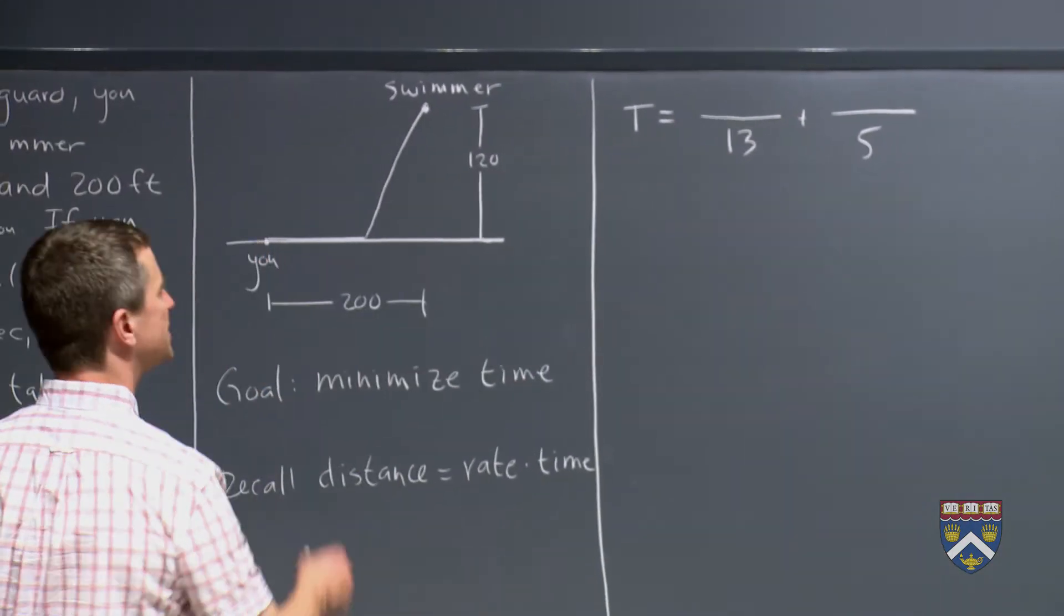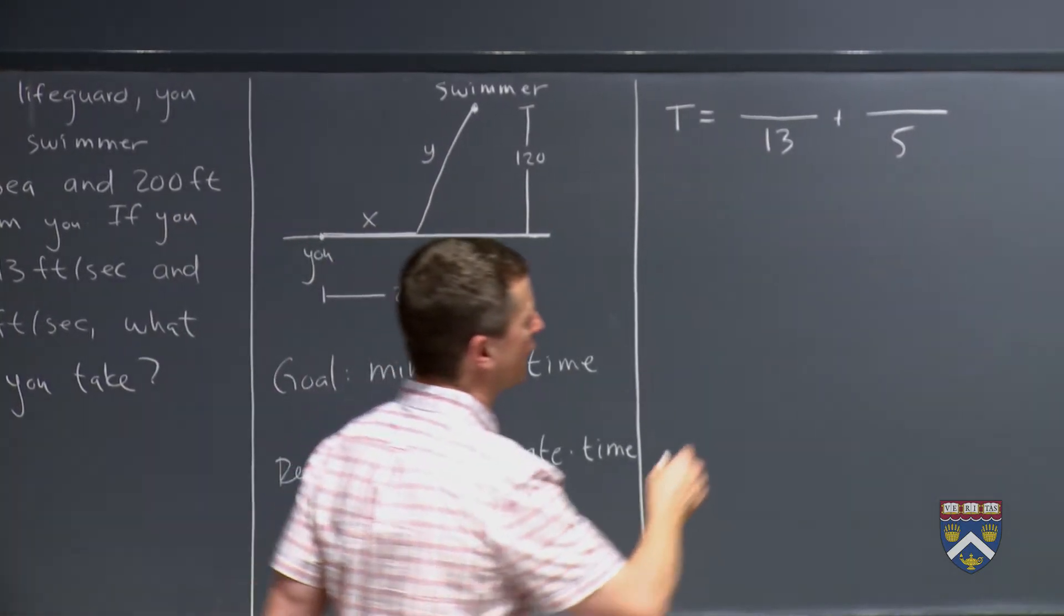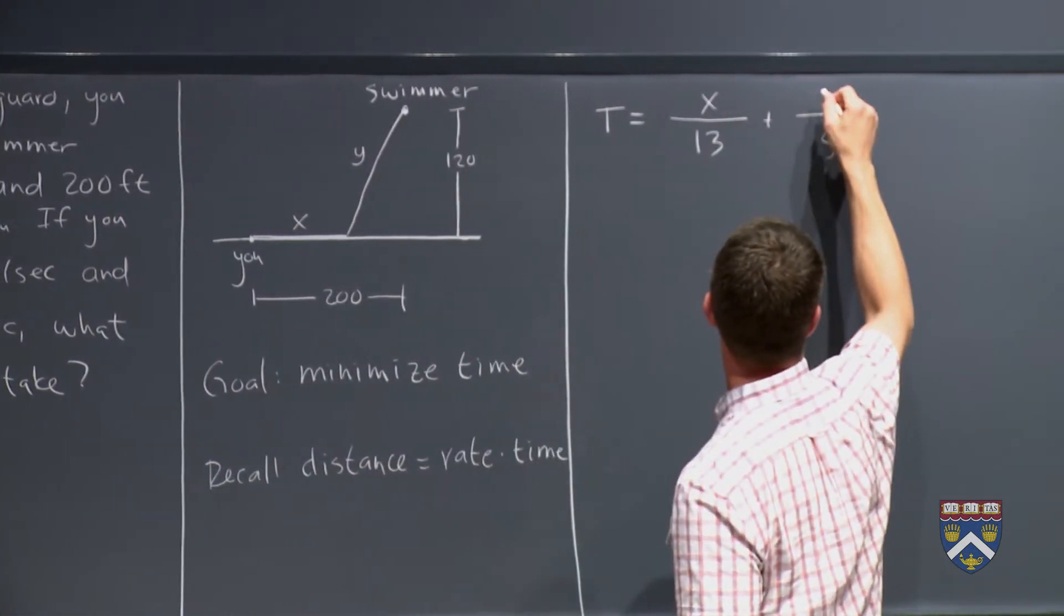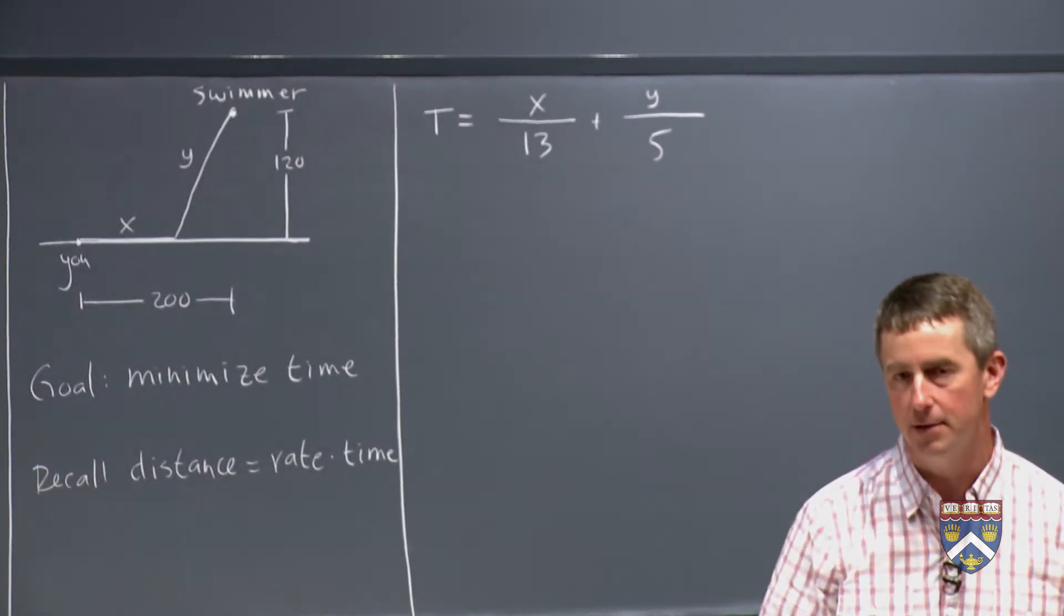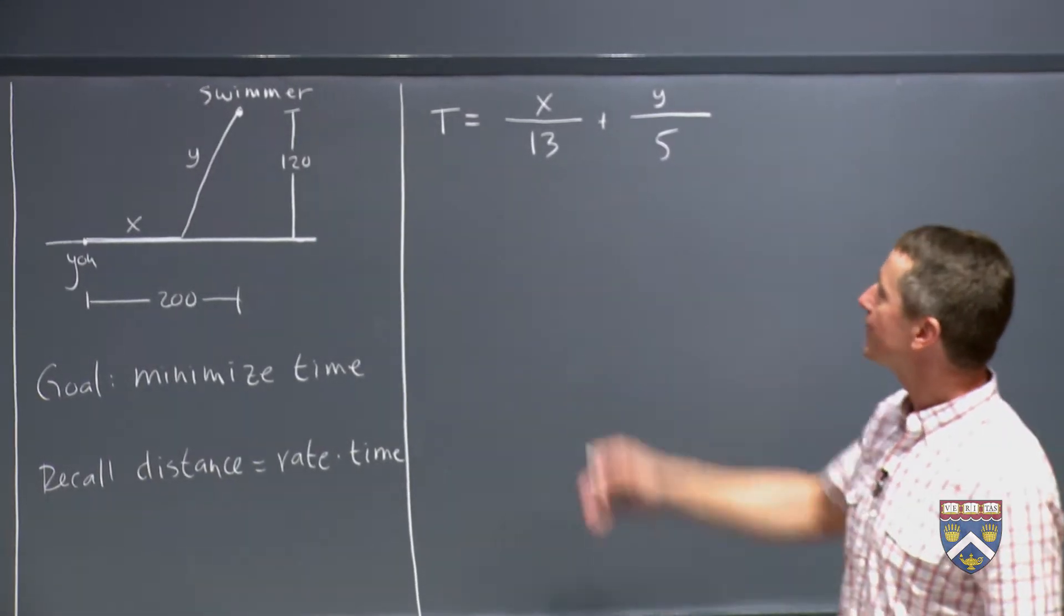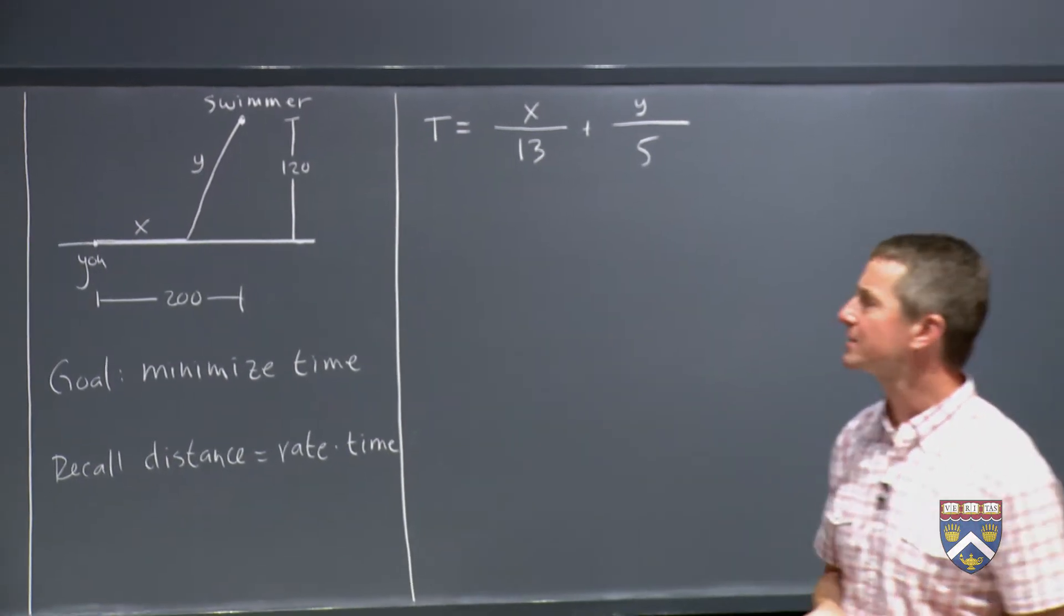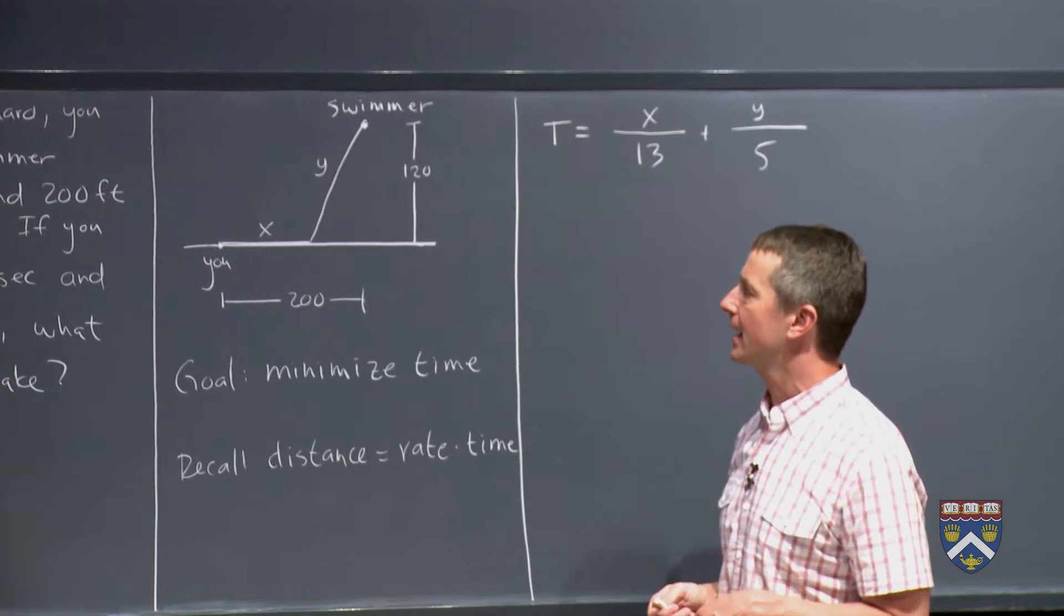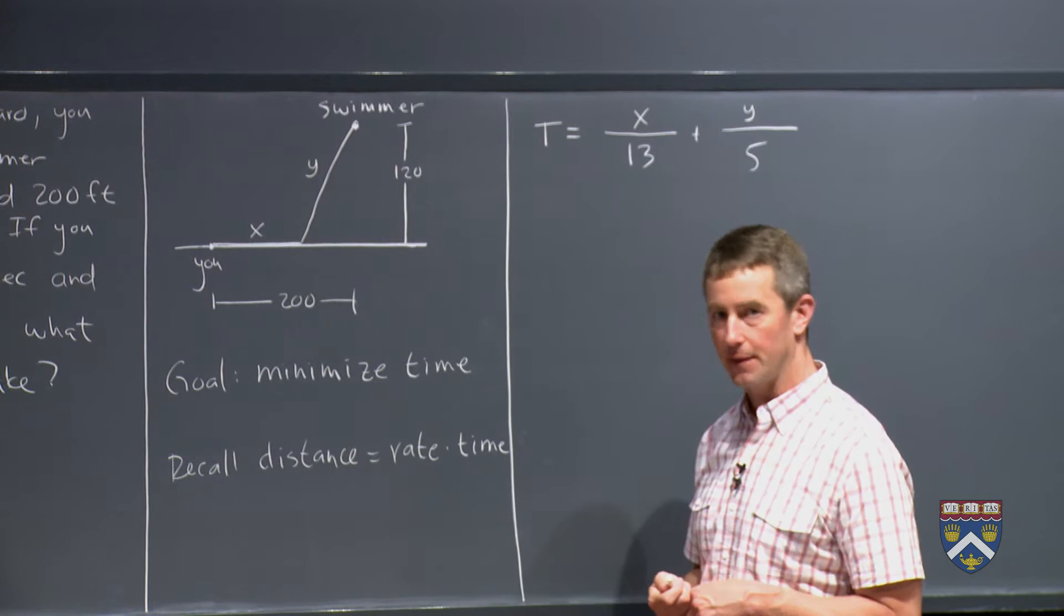So we could label these variables. We could call this x and then this distance y. And so our formula, as usual, would have too many variables. This is single variable calculus. We can't do it that way. So we'd have to relate x to y somehow using something else. Can you look at this picture and see how x is going to end up relating to y?